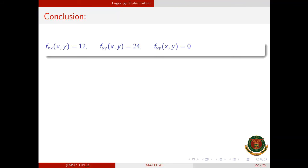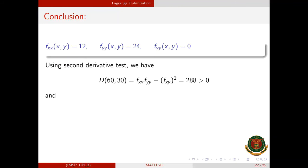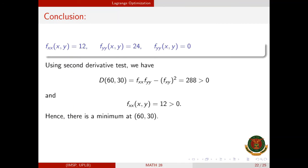We use the second derivative test. D(60, 30) equals the second partial derivative of F with respect to xx times the second partial with respect to yy minus the square of the mixed partial with respect to xy. This equals 288, which is greater than 0. Furthermore, the second partial of F with respect to xx equals 12, which is also greater than 0. Hence, F has a minimum value at (60, 30).